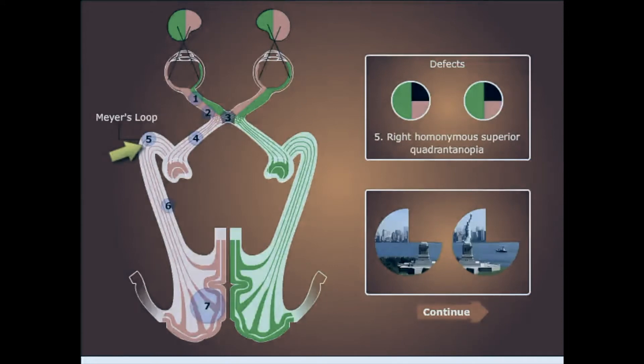Because Meyer's loop carries optic radiation fibers representing the upper part of the contralateral field, temporal lobe lesions can produce a visual field defect involving the contralateral superior quadrant. This will result in contralateral homonymous superior quadrant anopsia, or pie in the sky. The lesion on the left side will result in right homonymous superior quadrant anopsia.